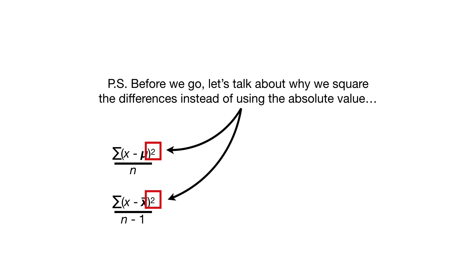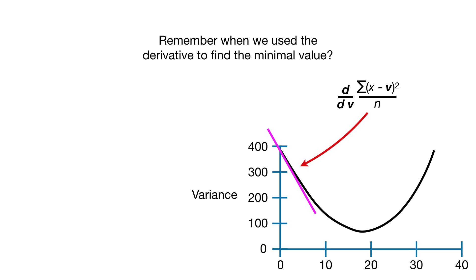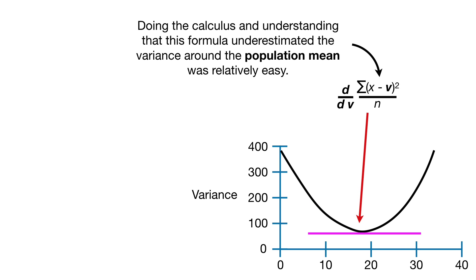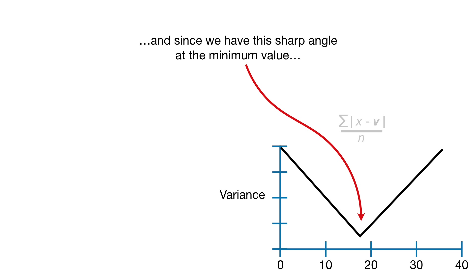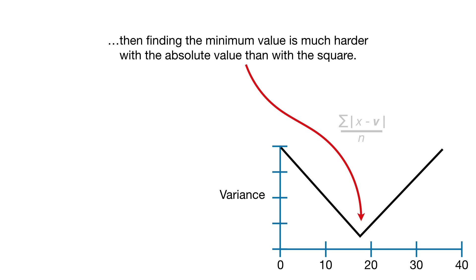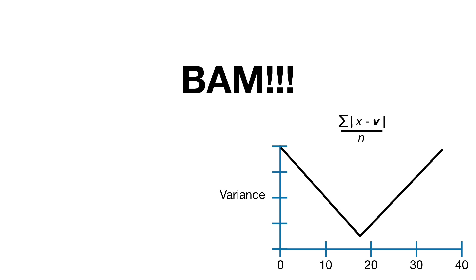Before we go, let's talk about why we square the differences instead of using the absolute value. Remember when we used the derivative to find the minimal value? In contrast, if we used the absolute value instead, we'd get a graph that looks like this — with a sharp angle at the minimum value. Since derivatives do not exist at sharp angles like this, finding the minimum value is much harder with the absolute value than with the square. BAM!